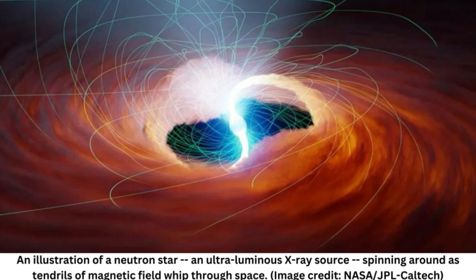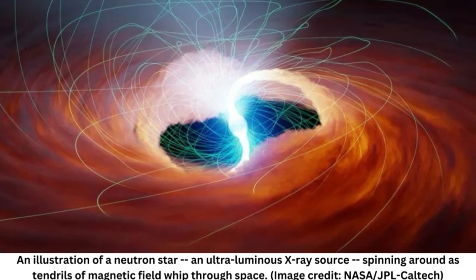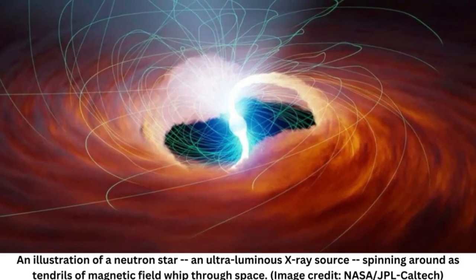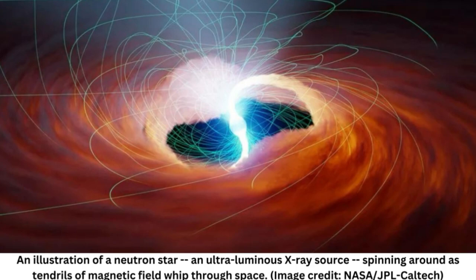The new study found that M82X2 consumes around 1.5 Earth's worth of material each year, siphoning it off of a neighboring star. When this amount of matter hits the neutron star's surface, it's enough to produce the off-the-charts brightness the astronomers observed.